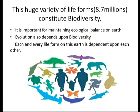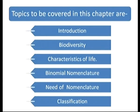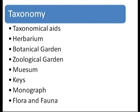All these life forms are present only on this beautiful planet, Earth. This huge variety of life forms, estimated to be 8.7 million, constitutes biodiversity. It is important for maintaining ecological balance on Earth. Biodiversity is the raw material for evolution, and every life form is dependent upon each other. It is not feasible to study each and every life form individually, so we need a systematic way to study this huge variety.